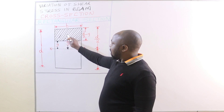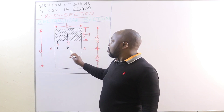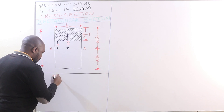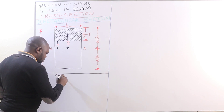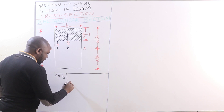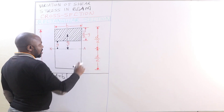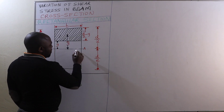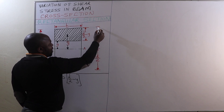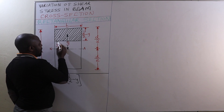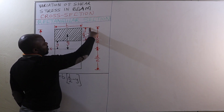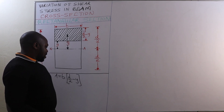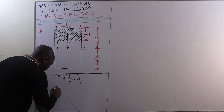The center of gravity of this shaded region is ȳ — that is, the distance from the center of gravity of the shaded region to the neutral axis. The area of the shaded region is given by the breadth multiplied by its depth, and the depth of the shaded region is D/2 minus y. From the neutral axis to the top is D/2, and from the neutral axis to the bottom of the shaded region is y, so the remaining depth is D/2 minus y. Therefore, that is the cross-sectional area of the shaded region.